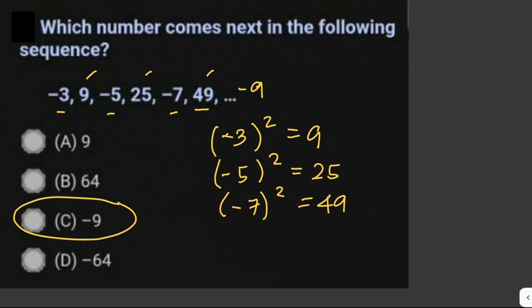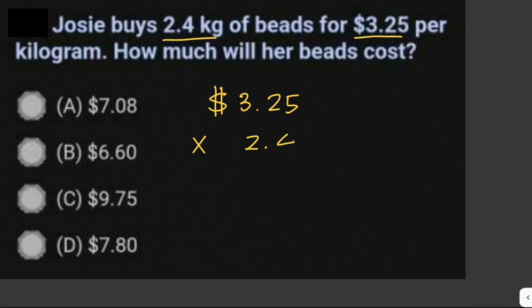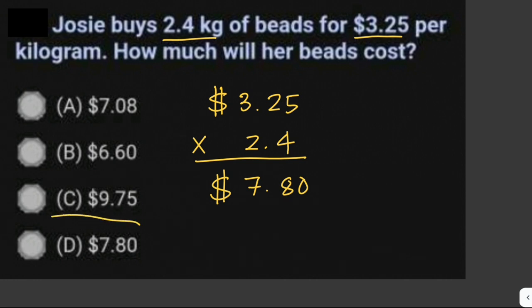Josie buys 2.4 kilograms of beads for $3.25 per kilogram. How much will her beads cost? Since the cost per kilogram is $3.25 and Josie buys 2.4 kilograms, we multiply 3.25 by 2.4 to get the total cost: 3.25 × 2.4 = $7.80. The answer is letter D.